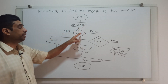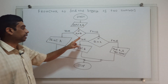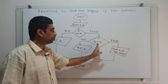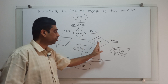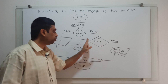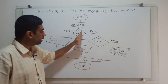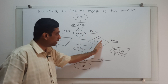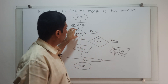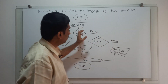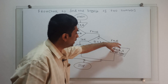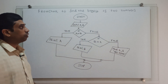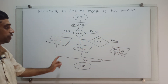I am obtaining an input A and B. If A greater than B, I am printing A. Otherwise, I am checking if B greater than A. If B greater than A is true, I am printing B. If A greater than B is false, and again B greater than A is also false, that means A and B are equal.